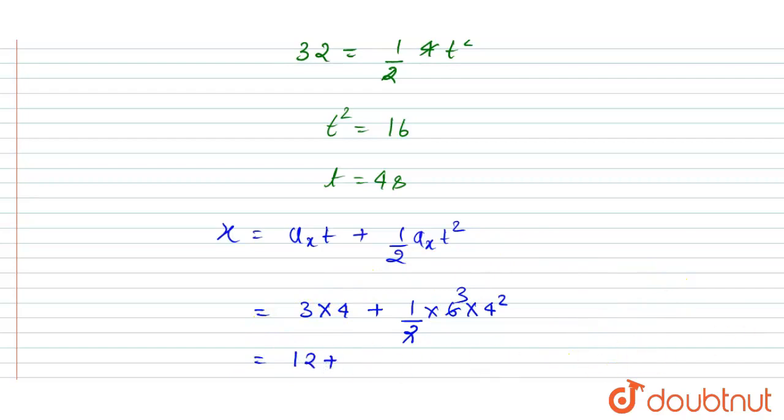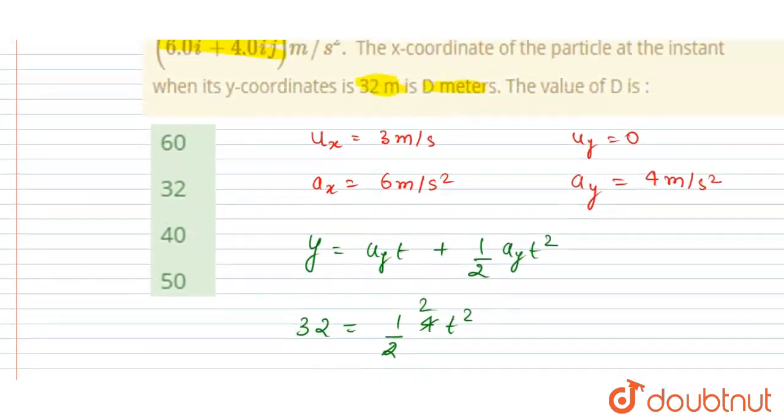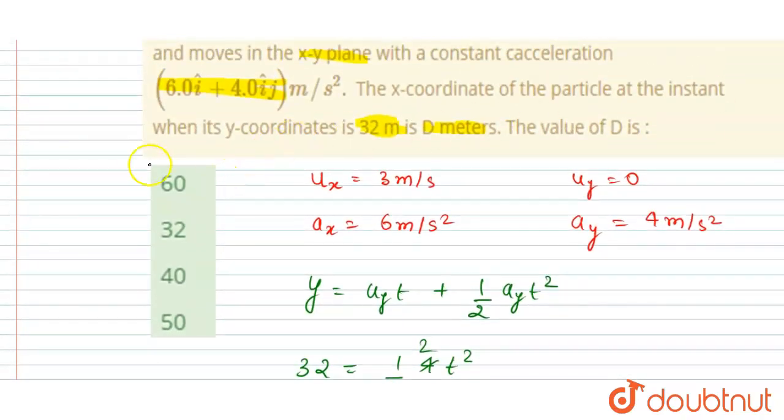So 16 whole square is 16 into 3, it is 48. So the x-coordinate will be 60 meters. So in the question, D value is asked here, so the value of D will be 60. Simple, thank you.